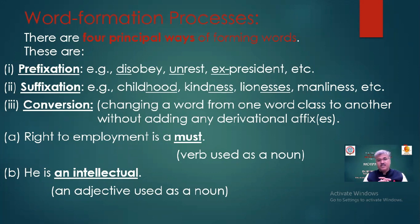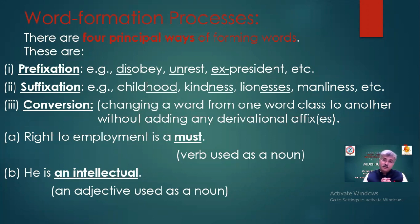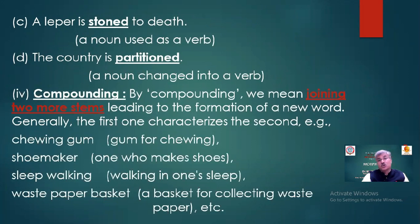More conversion examples: 'intellectual' is an adjective, but in 'he is an intellectual', it is used as a noun. 'Stone' is a noun, but in 'stoned to death', it is used as a verb. 'Partition' is a noun, but in 'the country is partitioned', it is used as a verb. The fourth type of word formation is compounding — joining two or more stems, where generally one characterizes the other. For example: chewing gum, walking stick, wastepaper basket.